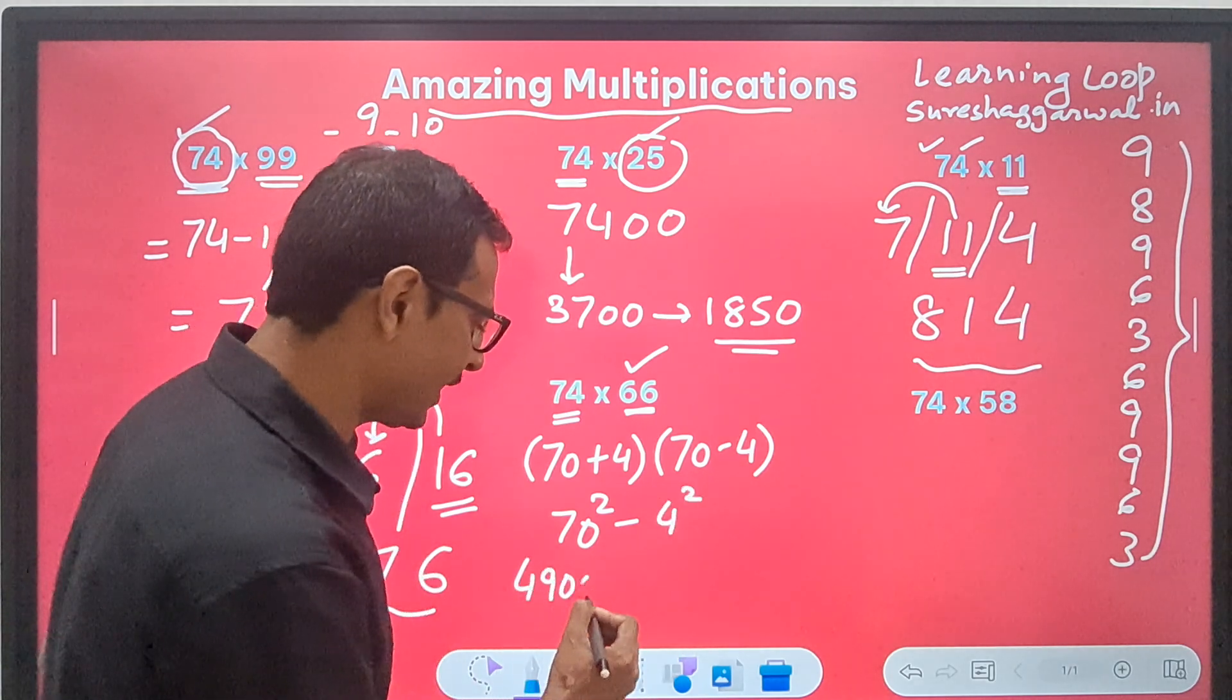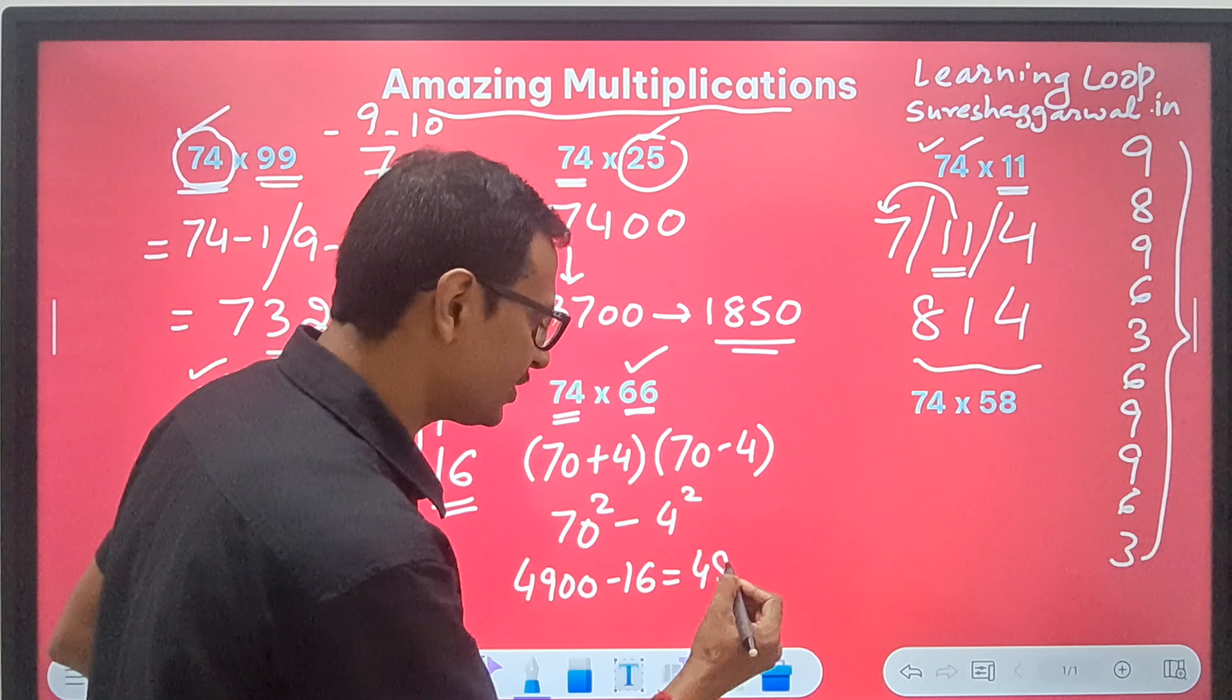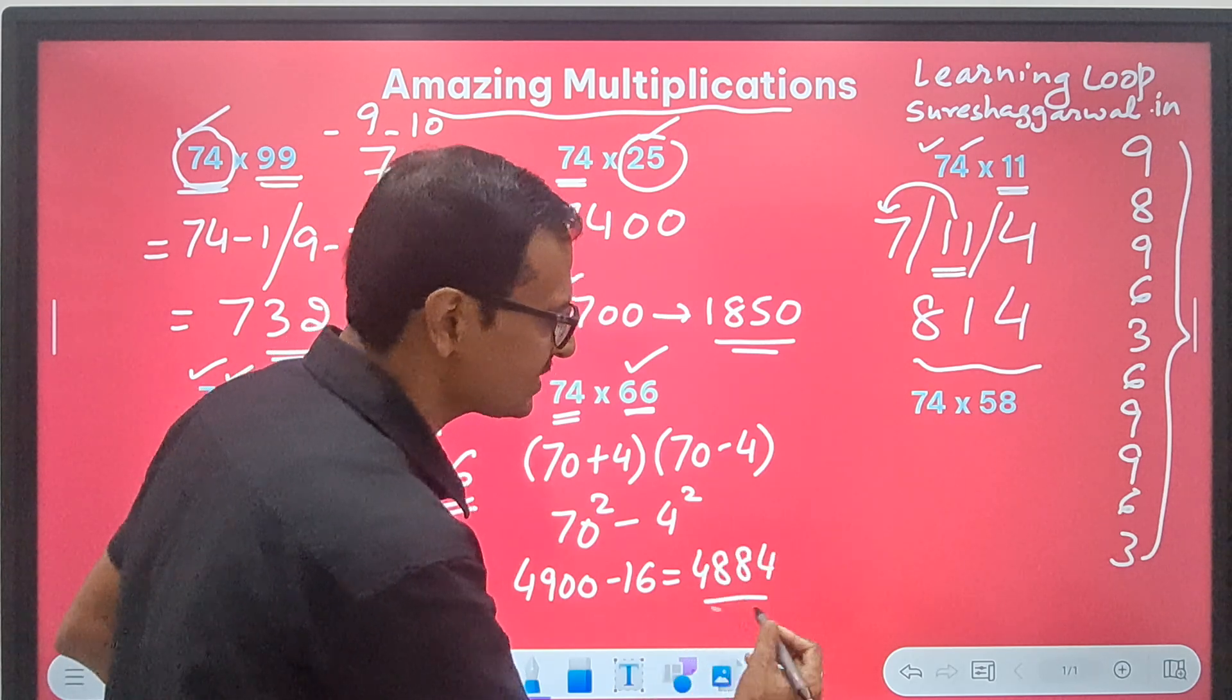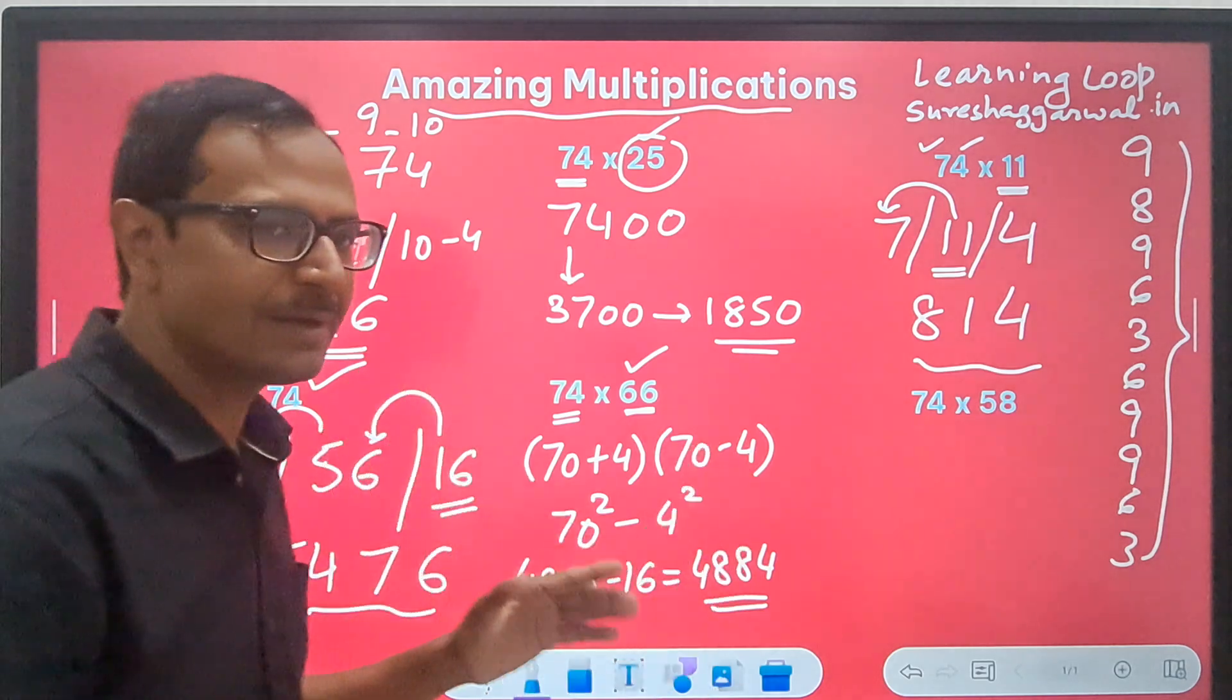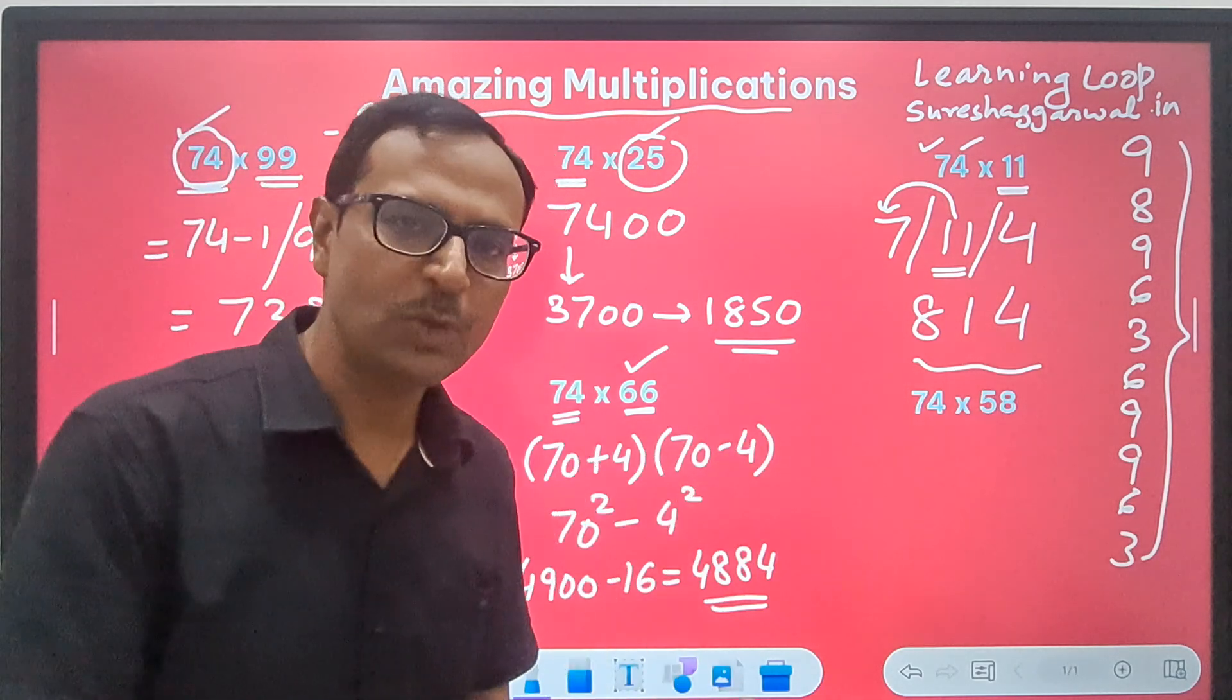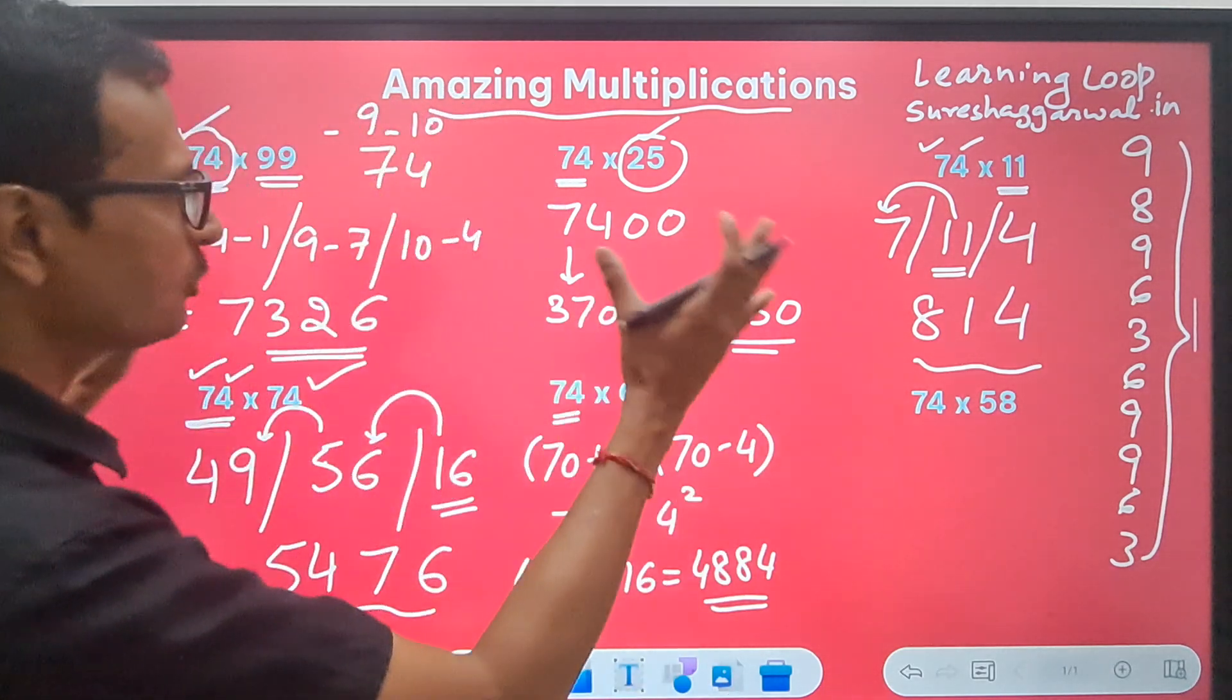That gives us 4884 as the product of 74 and 66. Again, lot of mental maths here. I am writing all the steps just to make you understand the things. We don't have to write everything. Okay?